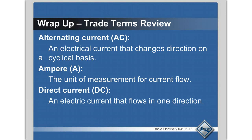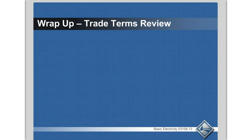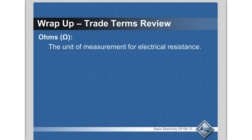We use direct current in car batteries, cell phones, and laptop computers. We don't use that in HVAC equipment. Ohms — that's the unit of measurement for electrical resistance.